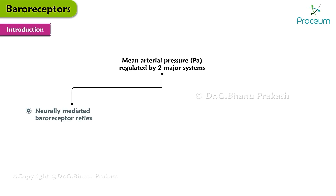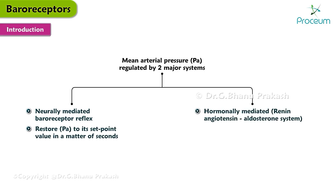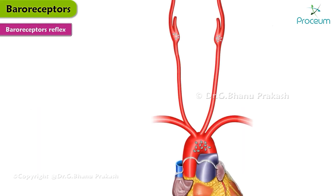The mean arterial pressure is regulated by two major systems. The first system is neurally mediated and is known as the baroreceptor reflex, which attempts to restore mean arterial pressure to its set point value in a matter of seconds. The second system is hormonally mediated and includes the renin-angiotensin-aldosterone system, which regulates mean arterial pressure more slowly, primarily by its effect on blood volume. Let's take a closer look at the baroreceptor reflex.